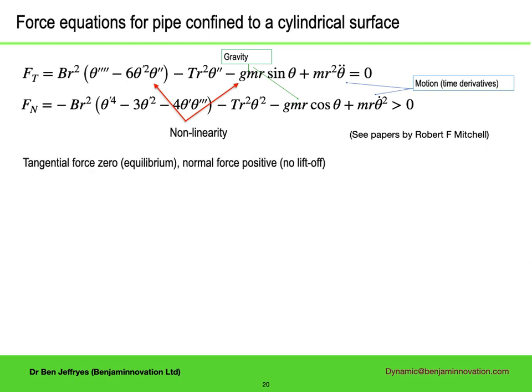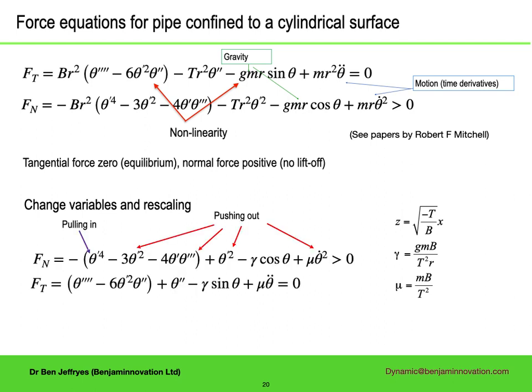So the equations we are looking for are tangential force zero, normal force positive. There are multiple ways we can non-dimensionalize, and I spent a long time using the wrong one, but this is the best way. Rescale the distance according to the compression, and then appropriately normalize the gravity term and the motion terms. So there is one parameter for gravity, and one for mass, and that's it.